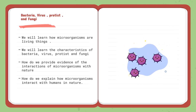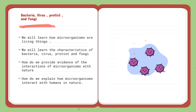For the third lesson — Bacteria, Virus, Protists, and Fungi — we will begin to learn more about microorganisms. Since we already covered that microorganisms are living things, we are going to talk about each microorganism separately and know its characteristics: from bacteria to virus to protists to fungi. Then we are going to provide evidence of the interactions of microorganisms with nature. When we interact with those microorganisms, what kind of relationship happens? Is it beneficial? Is it harmful? We're going to talk more about how microorganisms interact with humans in nature.